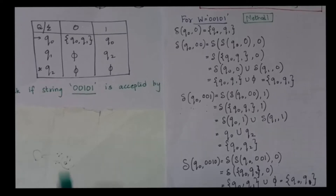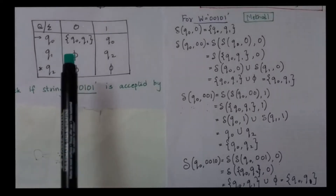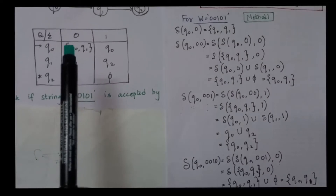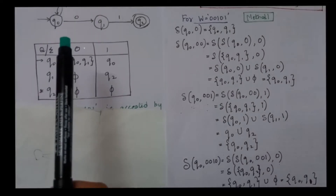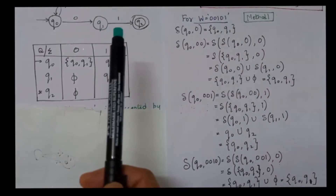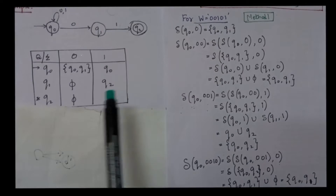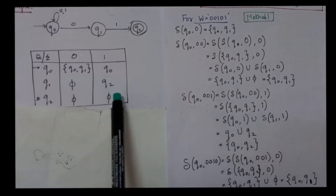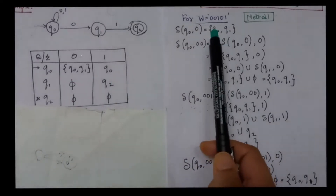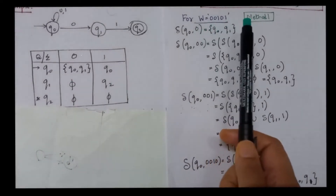Here I have one example. This is the NFA. This is the transition table and the string is 00101.